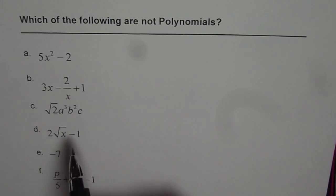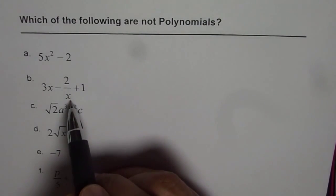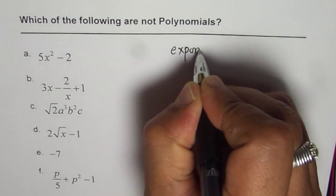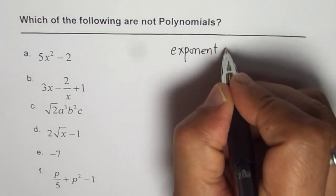What differentiates the first and the second is the exponent for the variable x. What we are looking forward is exponent for the variable should be what?